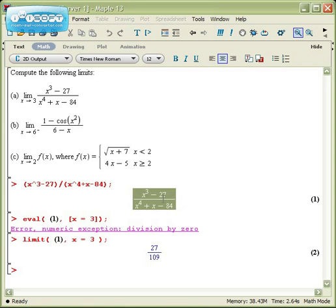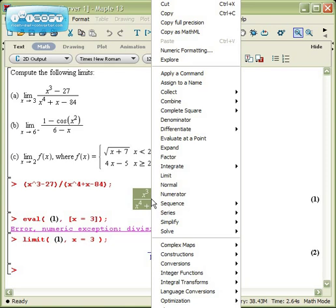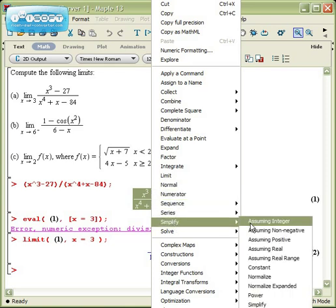So then what we would do is we would take this guy and we would clean it up. We would try to simplify it. So I'm going to have Maple give me a context menu, and there at the very bottom is simplify.